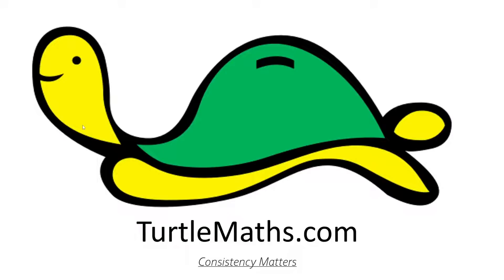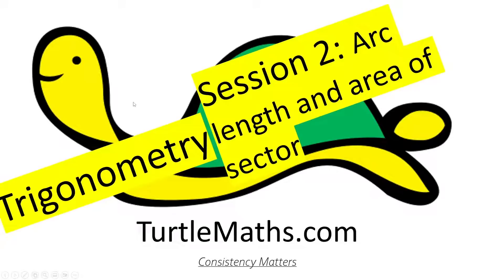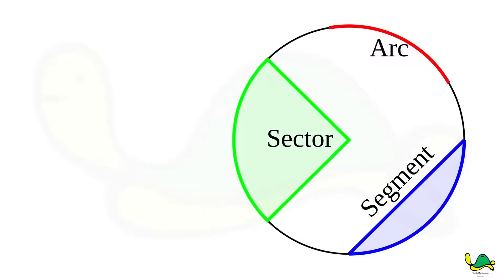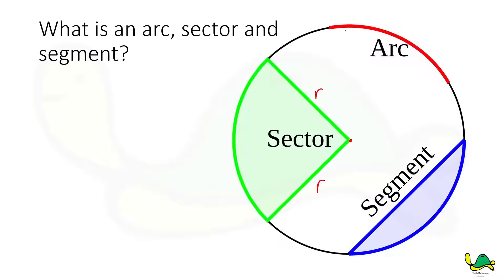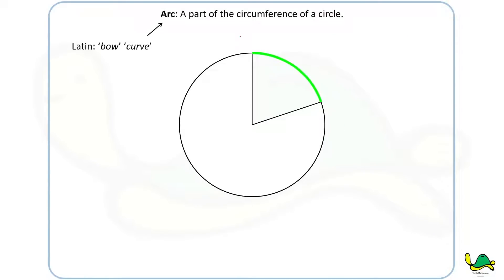Hello everyone, welcome to the second video of the trigonometry series. In this video we are going to learn about how to find the arc length and area of a sector. I'll be going a little slow, so if you want you can watch it on 1.5x speed. Basically, we have the components of a circle — this is the center, this is the radius. The arc is a part of the circumference of a circle, formed by an angle theta.